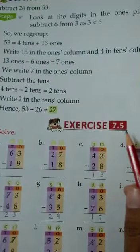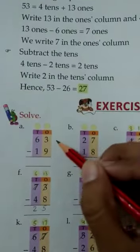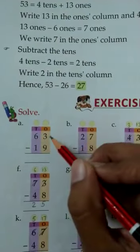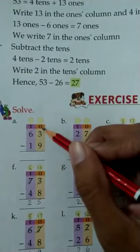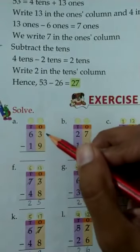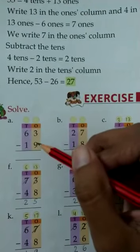Exercise 7.5. Look at the first example here. We have 63 and here we have 19. So first we will be subtracting the numbers which are at ones place. That is, we have to subtract 3 and 9.